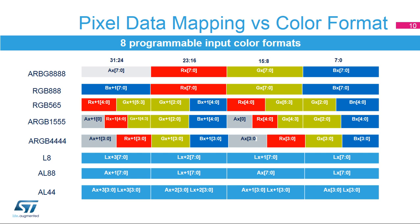The LTDC can be configured with up to 8 programmable input color formats per layer. Direct color formats include ARGB 8888, RGB 8888, RGB 565, ARGB 1555, and ARGB 4444. Indirect color formats include L8 (8-bit luminance or CLUT), AL44 (4-bit alpha and 4-bit luminance), and AL88 (8-bit alpha and 8-bit luminance).